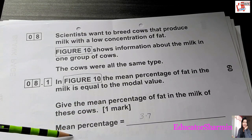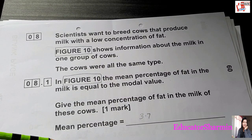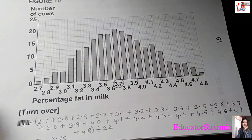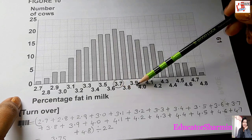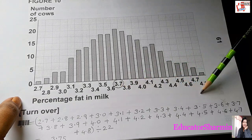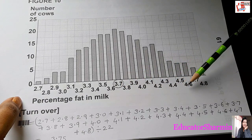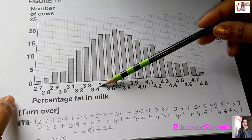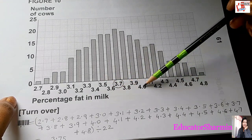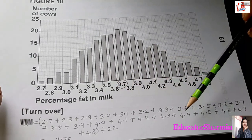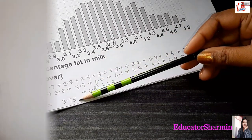To find the mean percentage, you look at the percentage fat in milk totals. To find the mean value, you add all the numbers and divide by the total number of values. So the answer is 3.75. That is how you find the mean value.